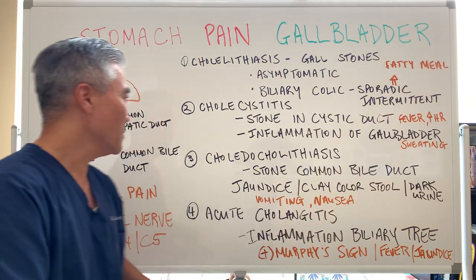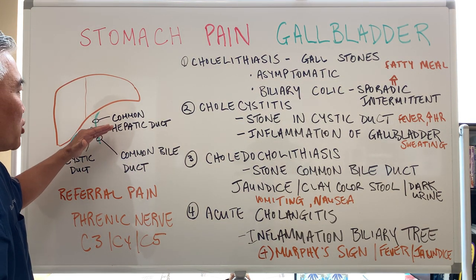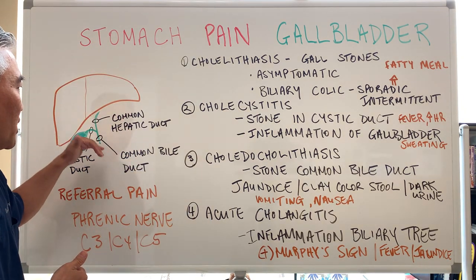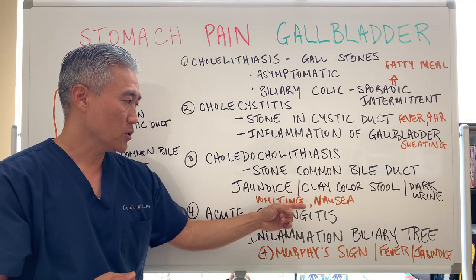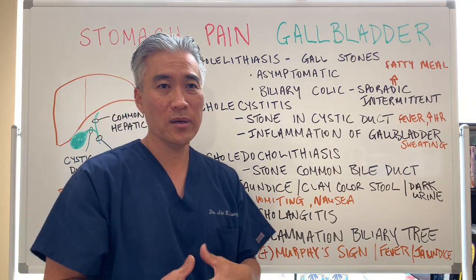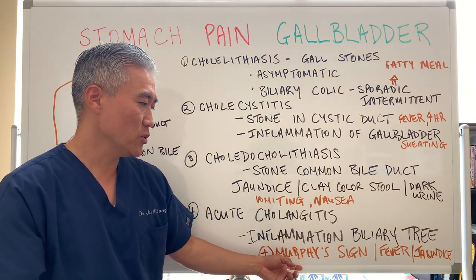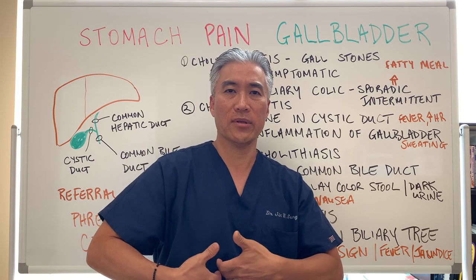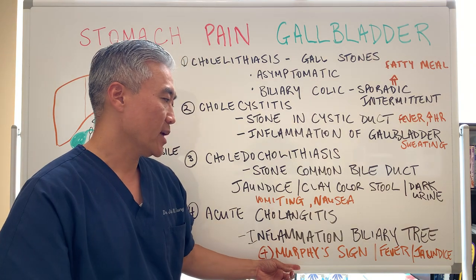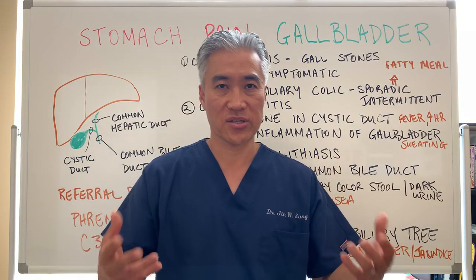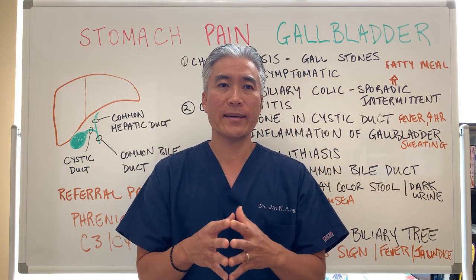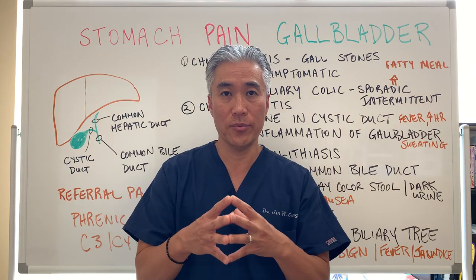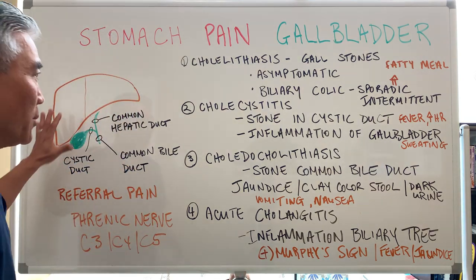Acute cholangitis is when the duct is blocked and you have inflammation above — it affects the entire biliary tree, all the connections from the liver down into the stomach area and gallbladder. That causes significant discomfort, inflammation, and it could be a medical emergency. You can perform what's called a Murphy sign: push down into the right upper quadrant, have the patient breathe in and out, and as they breathe out they experience sharp rebounding pain. You can also have fever and jaundice.